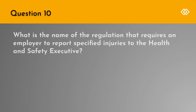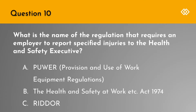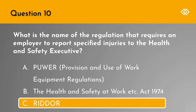Question 10. What is the name of the regulation that requires an employer to report specified injuries to the Health and Safety Executive? A. The Provision and Use of Work Equipment Regulations. B. The Health and Safety at Work Etc. Act 1974. Or C. RIDDOR. The correct answer is C. RIDDOR, or the Reporting of Injuries, Diseases and Dangerous Occurrences Regulation.